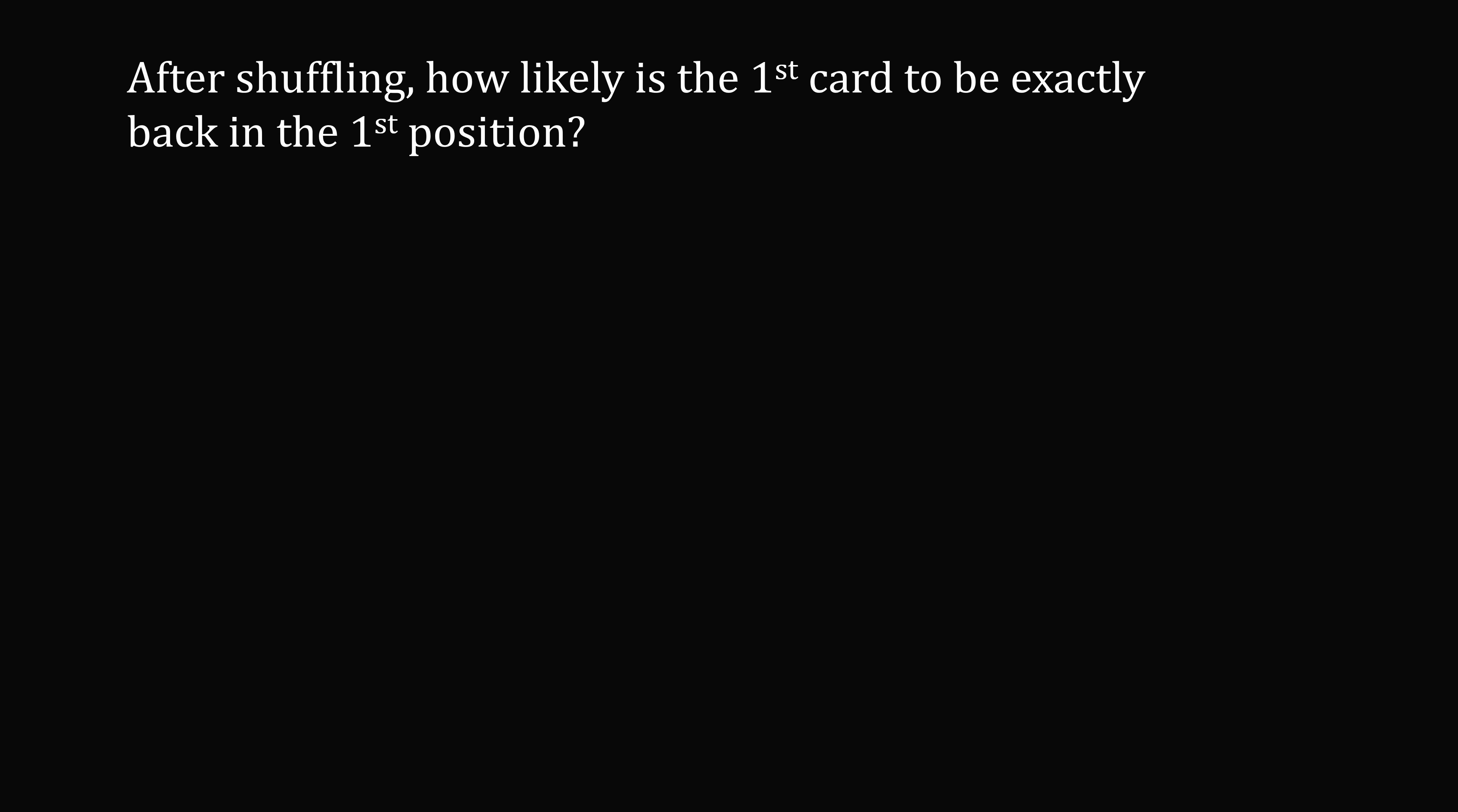So, after you shuffle, how likely is it that the first card will be in exactly the same spot of the first position? There are 52 equally likely positions the first card could go, so the probability that it's in the same spot is 1 over 52.